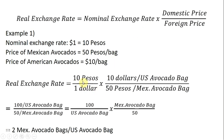Putting this information in our formula, we'll start with the nominal exchange rate and write it as 10 pesos per dollar, plugging that in. Then the domestic price is $10 per U.S. bag of avocados, divided by the price of avocados in Mexico: 50 pesos per one Mexican bag of avocados. Next, we simplify — pesos and pesos cancel, dollars and dollars cancel — so you're left with 10 times 10 equals 100, and 50 times 1 equals 50.